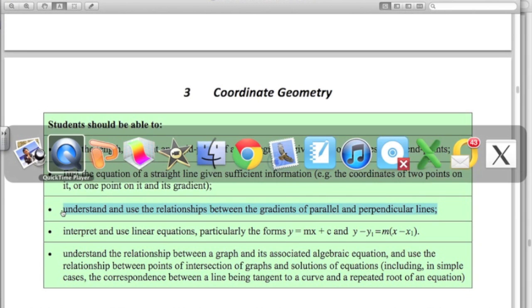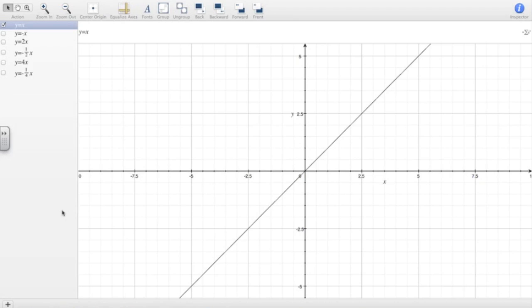So let's just investigate that. I've just got a few graphs here to have a look at. Here we've got the graph of y equals x, straight line with a gradient of 1 and y intercept of 0. Now obviously a line parallel to that is going to have the same gradient and you would have seen that before in IGCSE.